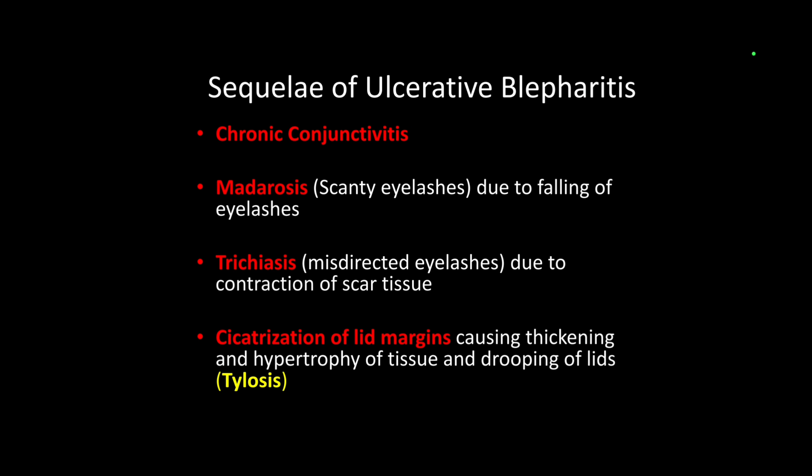What will be the end result of ulcerative blepharitis? It can result in chronic conjunctivitis, madarosis — which means absence or decreased number of eyelashes — trichiasis, which is misdirection of eyelashes, and cicatrization of the lid margin. Cicatrization is scarring which results in thickening or hypertrophy of the tissue and results in drooping of the lids, called tylosis.